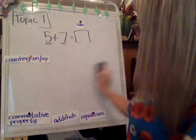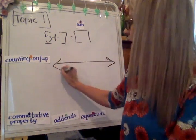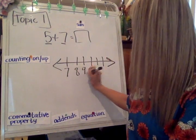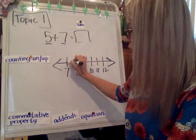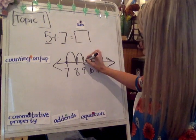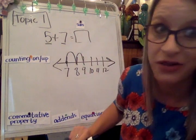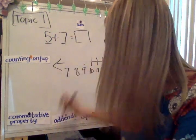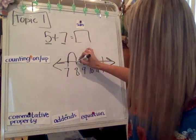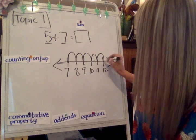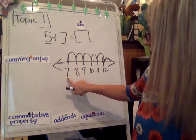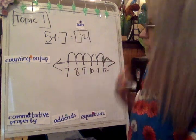There are some times where we will even have an open number line so that we can chart that. And we would say 7 would be your start number, and you could even do like a dot. 7, and then you want to do 5 jumps after that. So 7, and then you're going to do 1, 2, 3, 4, 5. Your stop number would be right here on number 12. So 7, 8, 9, 10, 11, 12. The sum is 12.